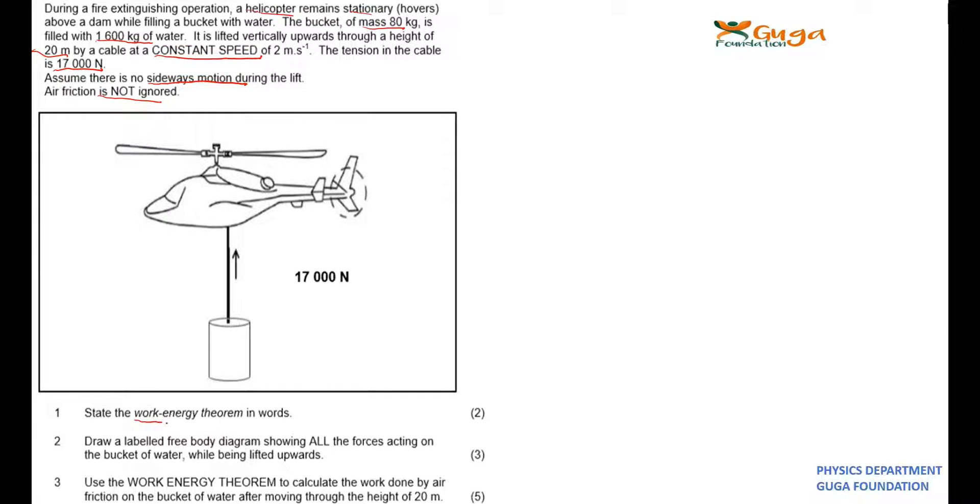Now the first question asks to state the work-energy theorem in words. So this work-energy theorem is given by the work net equals change in EK, the change in kinetic energy. That's the definition.